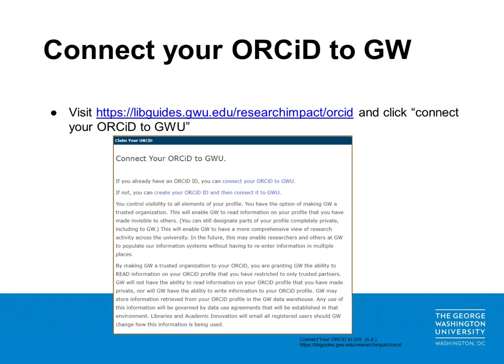By making GW a trusted party, the institution gains read-only access to information that you have designated as trusted within your account. It is important to note that when linking your ORCID, GW will not have the ability to update or change any information in your profile. Going forward, it is possible that institutional verification of affiliations and research output may become a stronger feature of the scholarship ecosystem, thus linking may become beneficial.